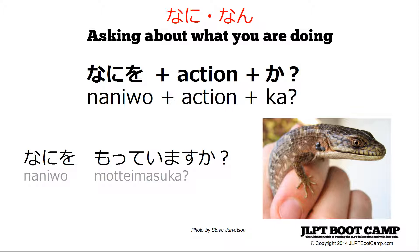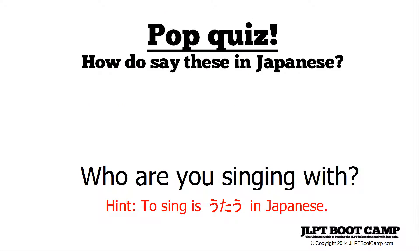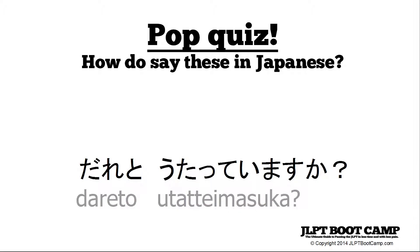Let's go over a quick pop quiz before we run out of time. Some quick translation: can you translate 'who are you singing with?' To sing in Japanese is 'utao.' How would you say that in Japanese? The answer would be 'dare to utatte imasu ka' — who are you singing with?